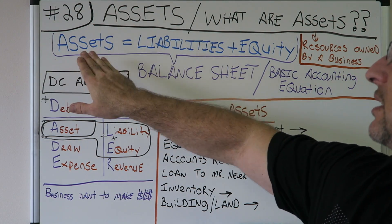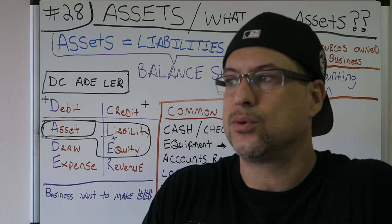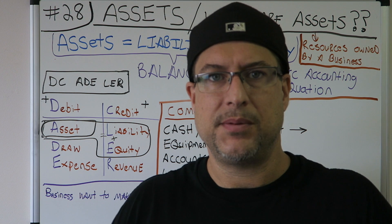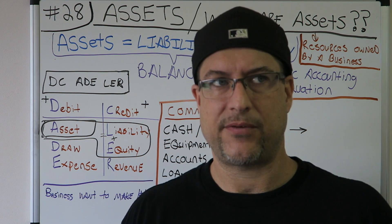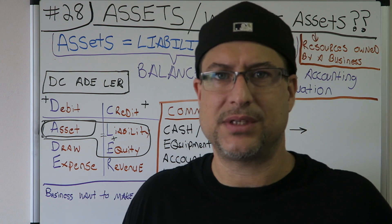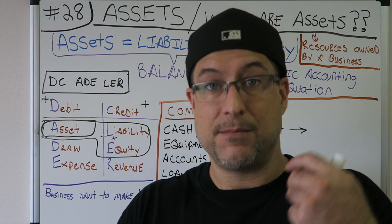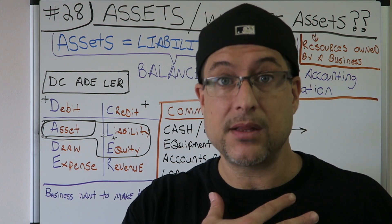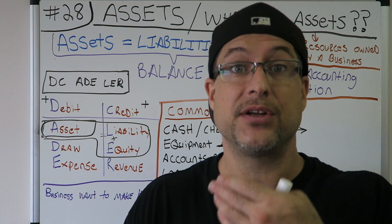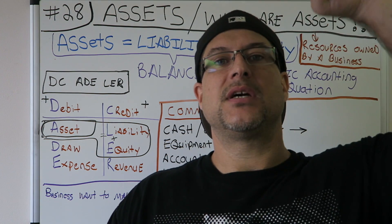Assets equal liabilities plus equity is also called the basic accounting equation. If you're taking this in school, you'll see that question. Honestly, after school I don't really use that term — I just call it the balance sheet. The balance sheet is in my opinion the most important financial statement. I need a balance sheet and an income statement every year to do tax returns, because it's all about making money and paying taxes.